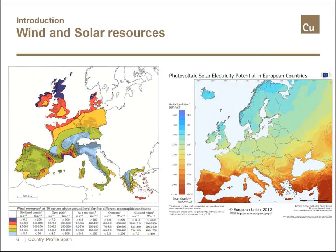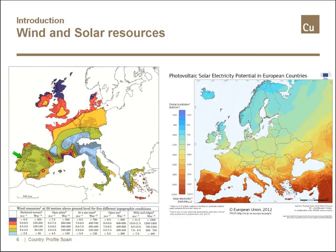Spain has big wind and solar potential. The map on the left shows the wind resource — most of the surface appears in green, meaning rather low average speed of about 4 meters per second for sheltered terrain. However, in hills and ridges this average value multiplies by 2, translating the potential to levels comparable to Scotland. Considering that Spain is a very hilly country with an average altitude of 660 meters — second only to Switzerland in Europe — the onshore wind energy potential is actually quite high. Spain is also well known in Europe for its solar resource.